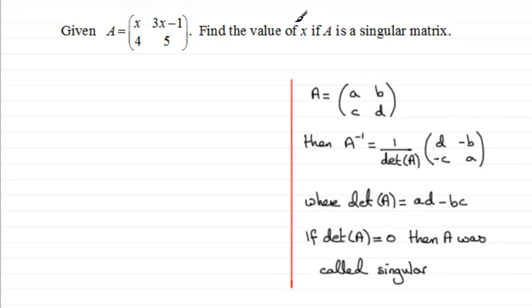So if we're to find the value of x if A is a singular matrix, then we need the determinant of matrix A to equal 0. So if I was answering this question, I would put a little intro: if A is singular, then the determinant of A equals 0.